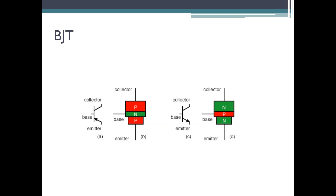In the previous video sessions we checked about diodes, photodiodes, LEDs, and optocouplers. In this video session we'll check regarding BJTs. BJTs are the advanced version of diodes. Diodes were normally two-layer devices — you would take a p-type material and diffuse it with an n-type material, and this was what you called a diode.